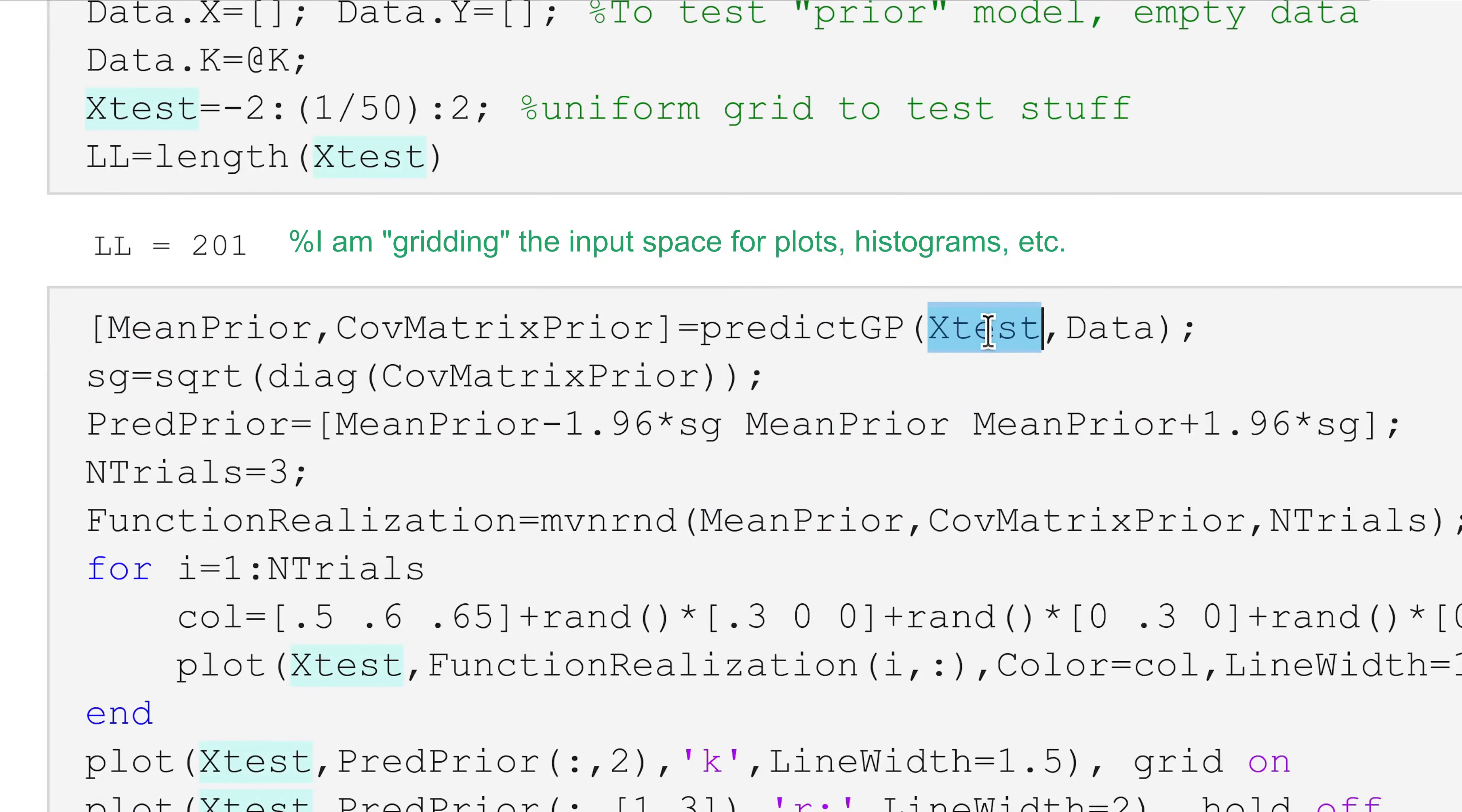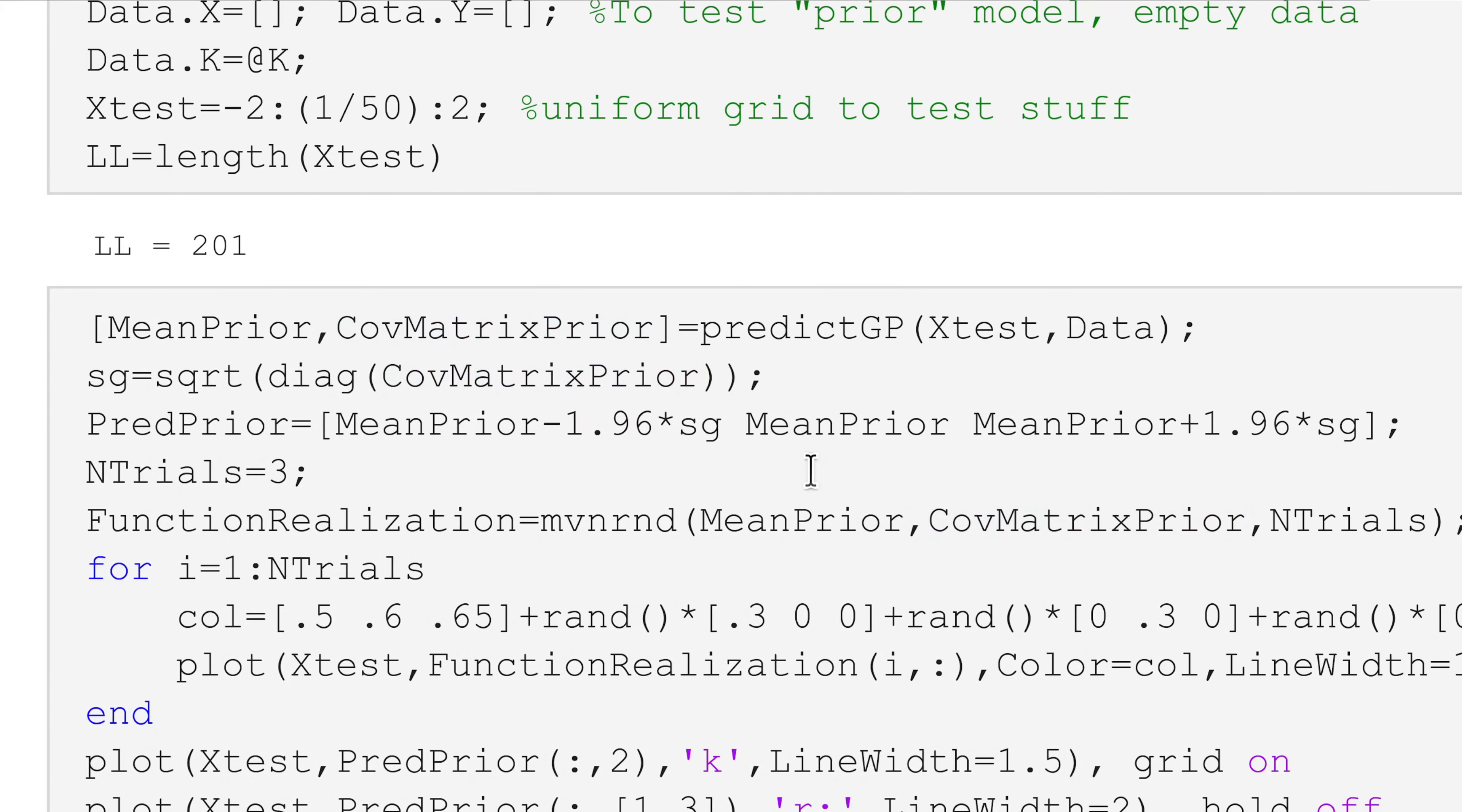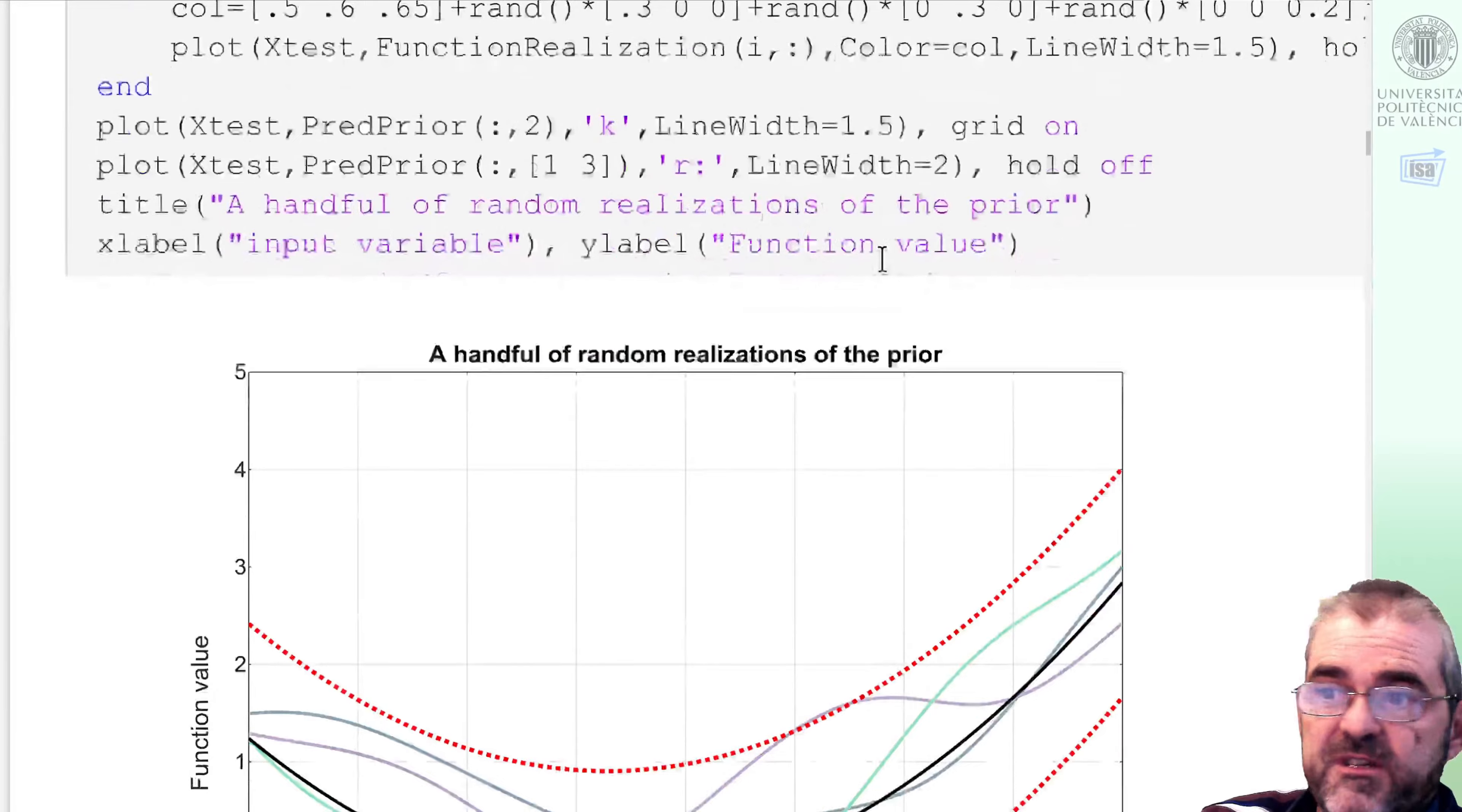The code at the end of the file provides this prediction over a set of test points because I cannot simulate an infinite number of points. I am gridding the interval minus two, two, using 201 grid points. Predicting at those test points, I get the mean and covariance matrix. Covariance matrix is a 201 times 201 square matrix. Then I get confidence intervals.